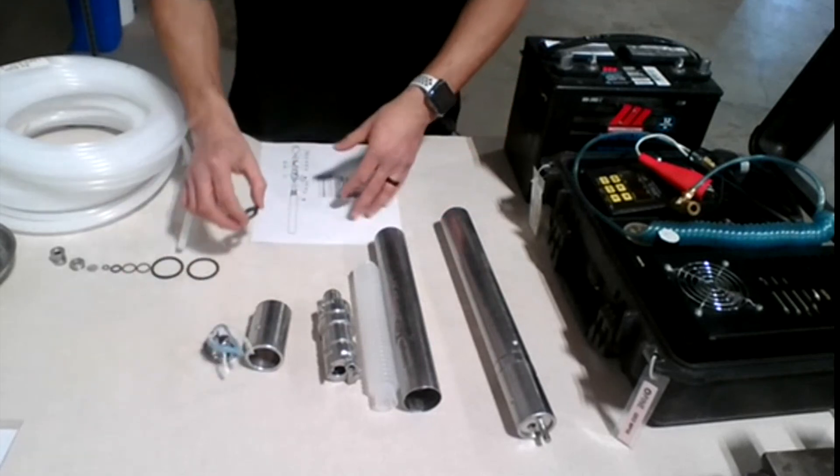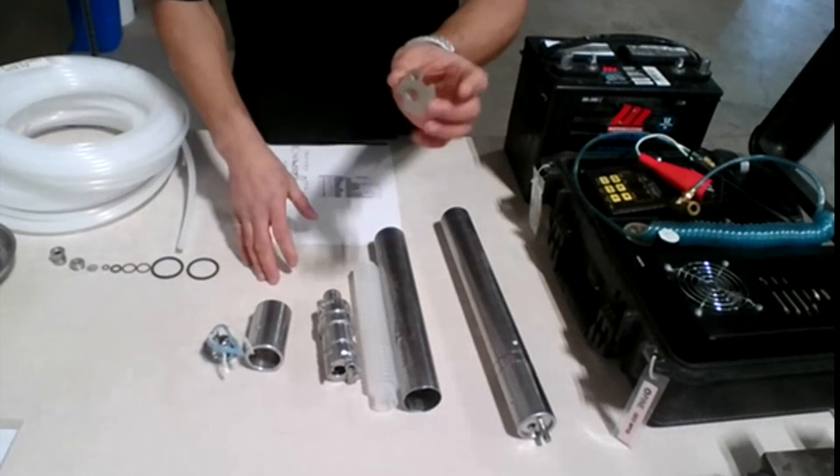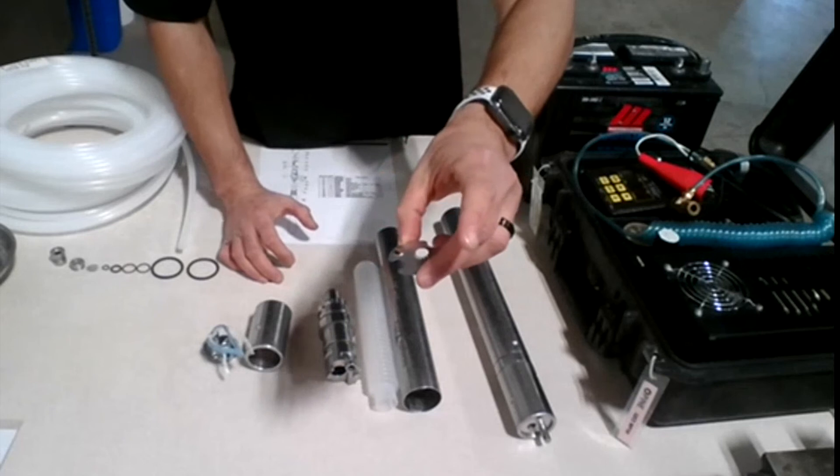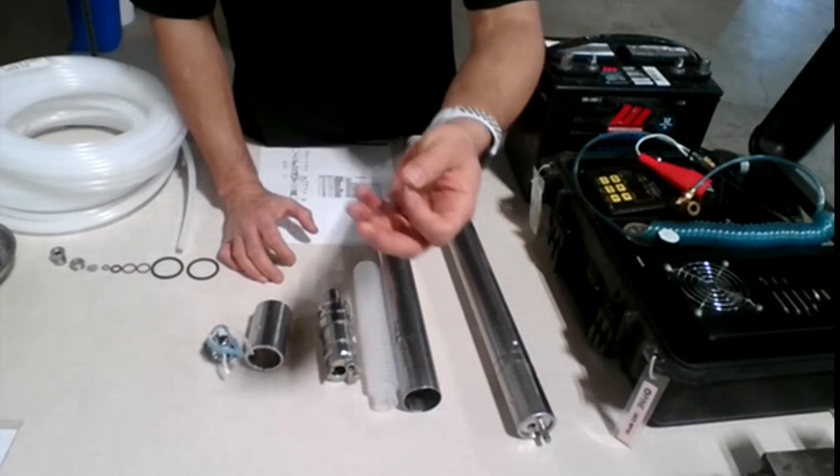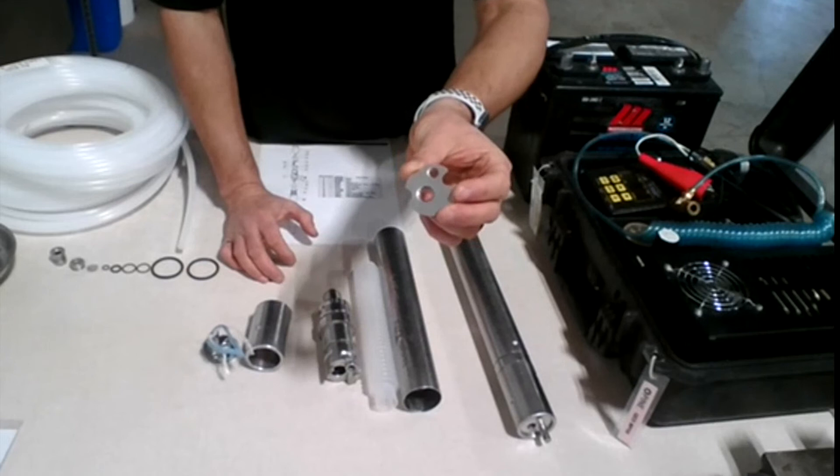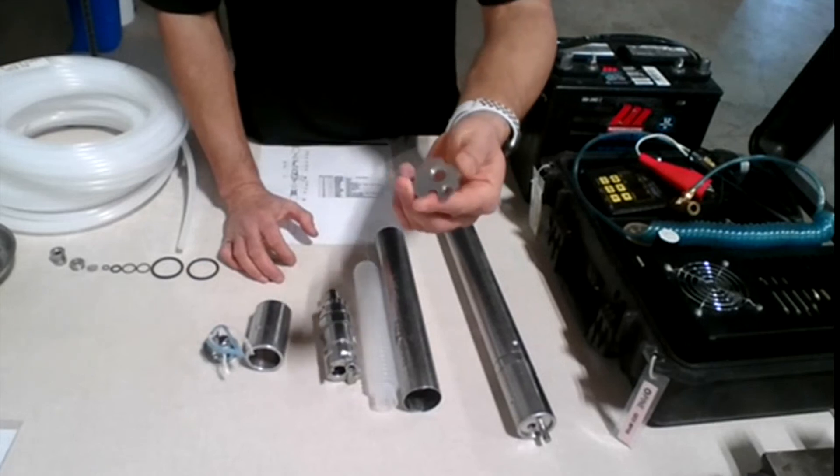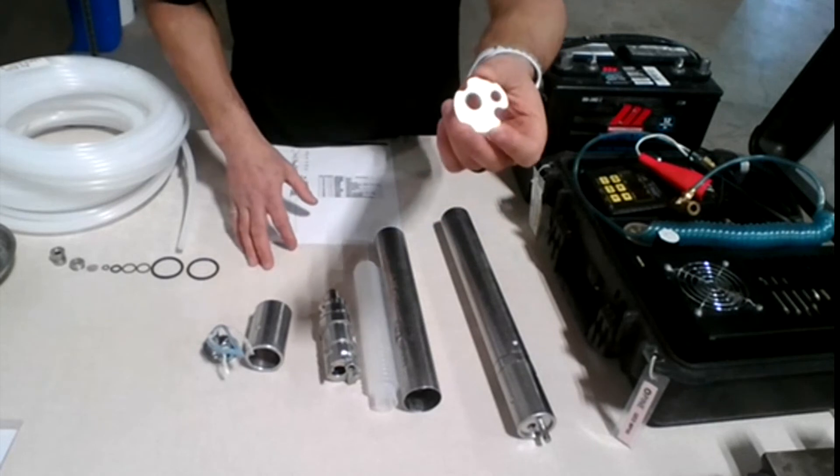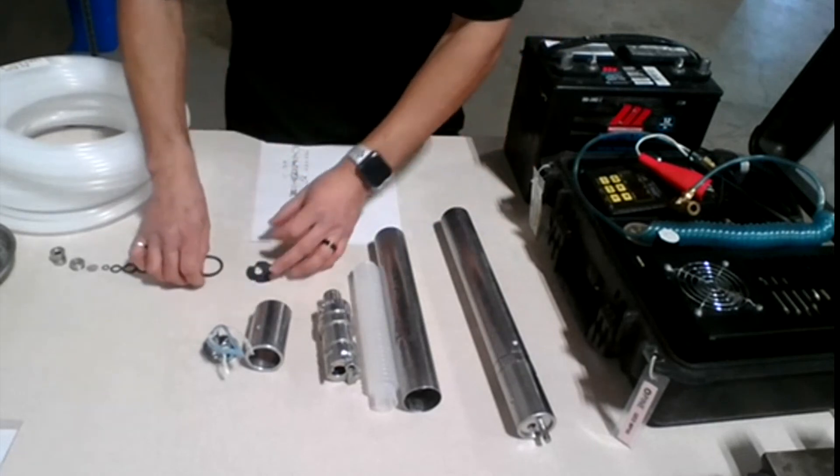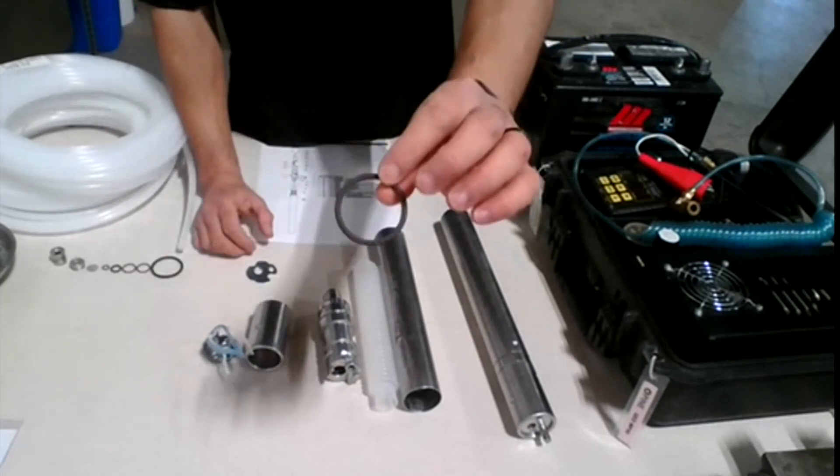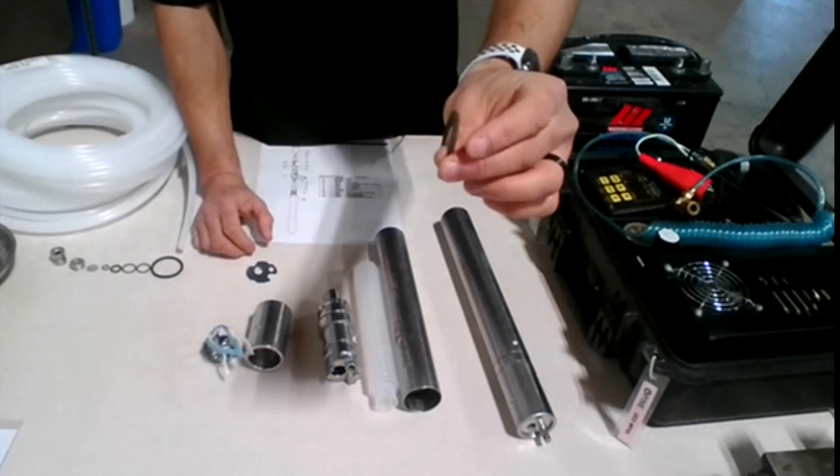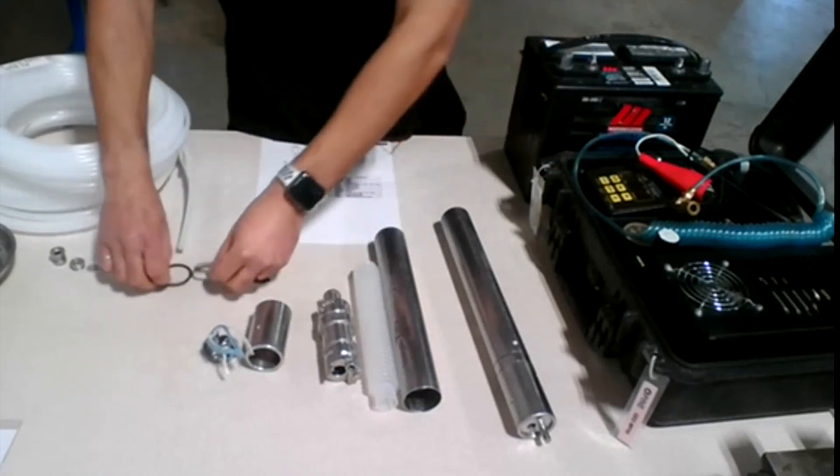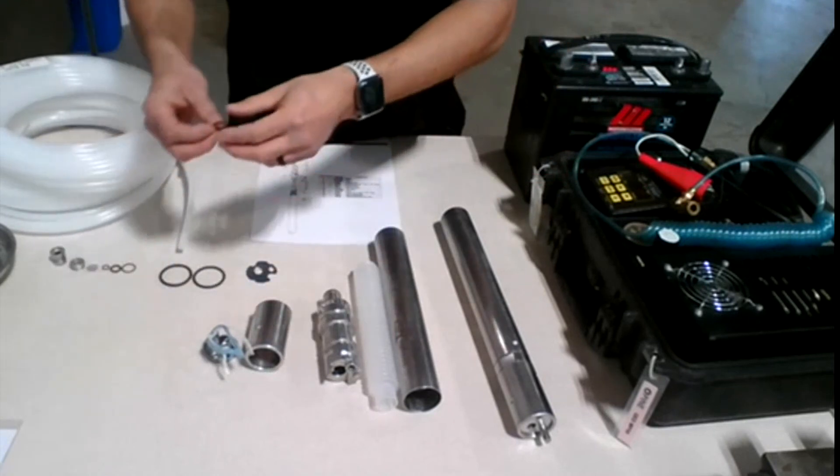So the components also for the bladder pump, we have the grab plate. Which actually, as you can see from the design, it helps holding those tubings down. So when you pull up the air tubing or the water tubing, it won't come off the pump itself. And we just have a number of different O-rings here, different sizes.